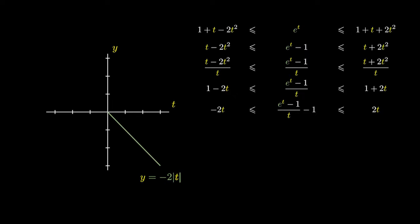Graphically, the lower function has equation y equals negative 2t, which approaches 0 as t approaches 0. Similarly, the upper function is given by y equals 2t, which approaches 0 as t approaches 0. Since the middle function is squeezed between these two functions, and the upper and lower functions approach 0, the middle function also approaches 0.